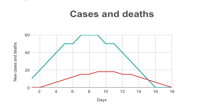I have constructed a fictitious epidemic showing new daily cases and new daily deaths of a certain disease in green and red respectively. As you can see from the graph, someone needs to be sick or classified as a case for some time before they can die. In this fictitious population, the time from being identified as a case to the time of death is two days on average. The peak of cases was reached on days seven to nine, whereas the peak of deaths occurred between days nine and eleven.